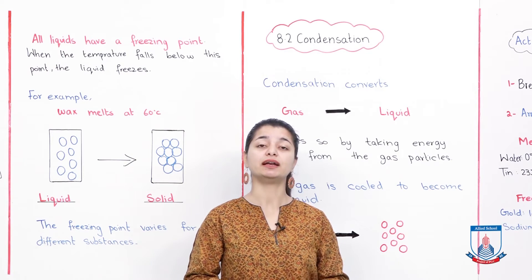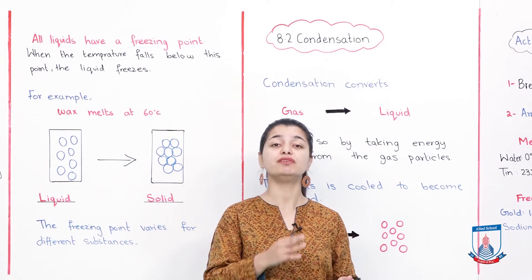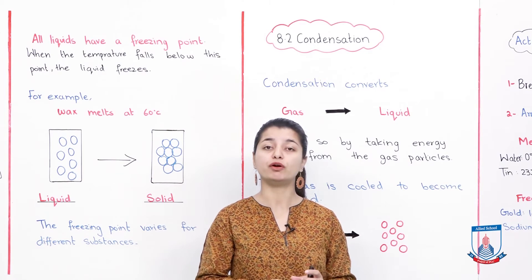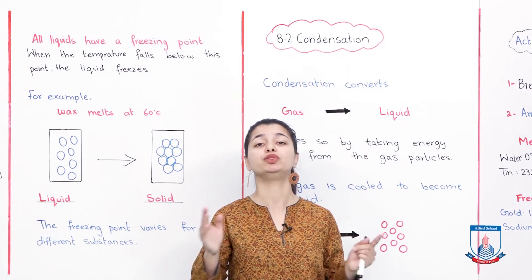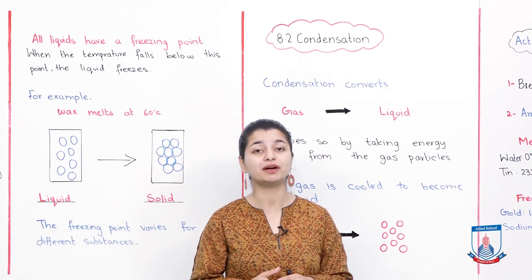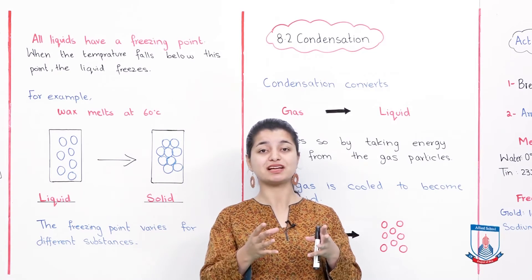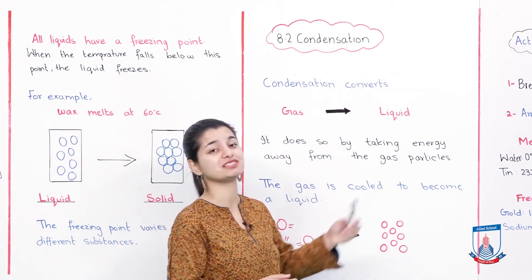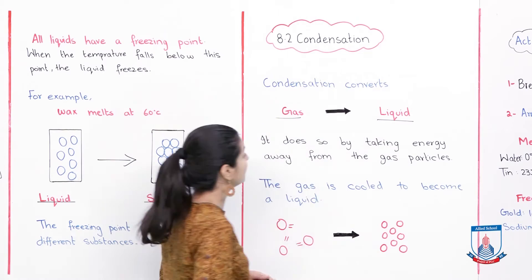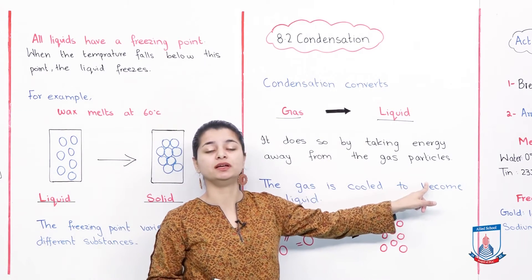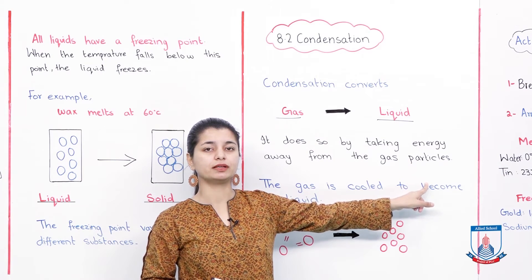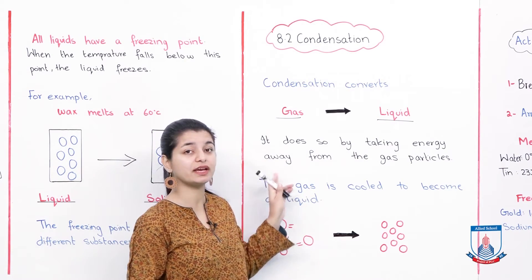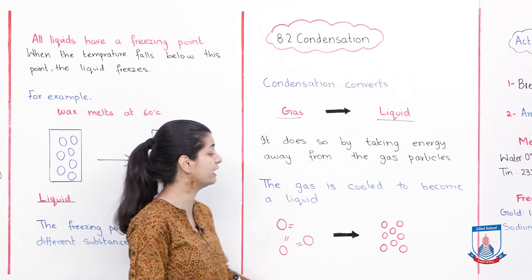What we have here is condensation. We have covered melting and freezing, and now there is a process called condensation. What is condensation? Basically, a gas is converted into a liquid. So instead of a liquid turning into a gas or a solid turning into a liquid, in condensation gas becomes a liquid. That also happens through cooling. Because the particles in a gas are very far apart and move very freely, when you reduce the energy, they turn into a liquid and their movement becomes restricted.